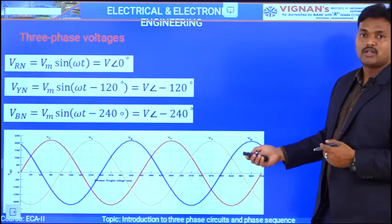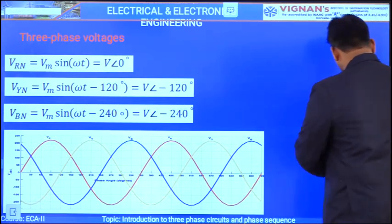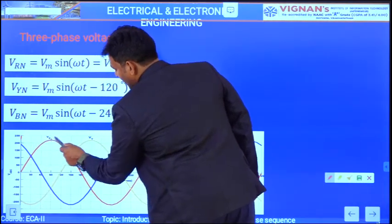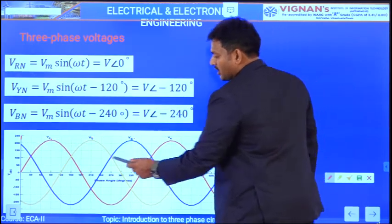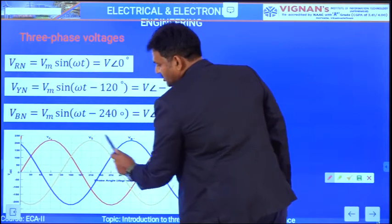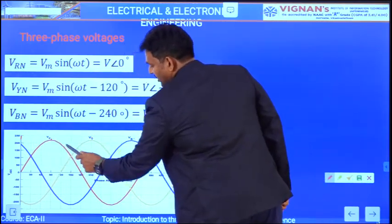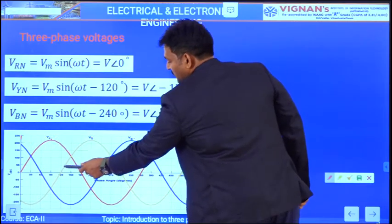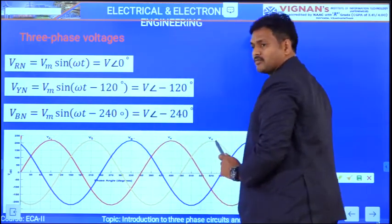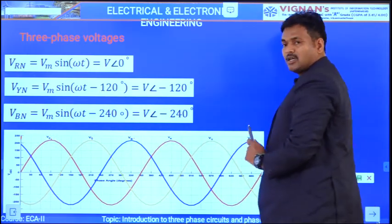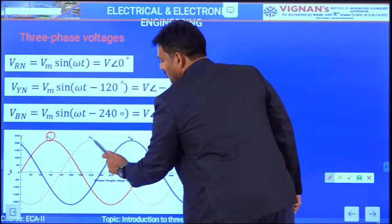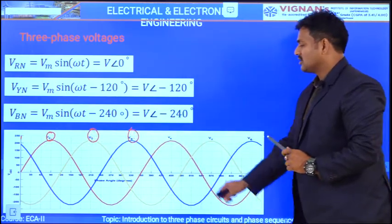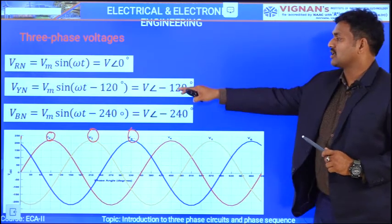In graphical form, the y-axis shows the three voltages V_R, V_Y, and V_B, and the x-axis shows angles (30°, 60°, 90°, etc.). Plotting V_m sin(ωt) gives a red curve for V_R; plotting V_m sin(ωt − 120°) gives a yellow curve for V_Y; the third equation gives a blue curve for V_B. In the waveform, R phase appears first, followed by Y phase, then B phase — confirming the phase sequence R-Y-B.